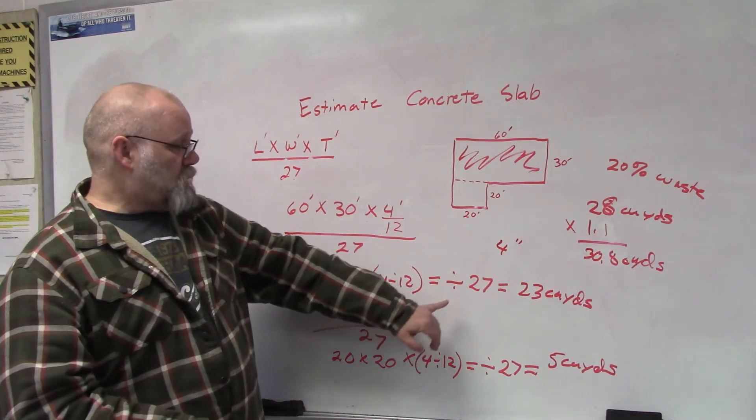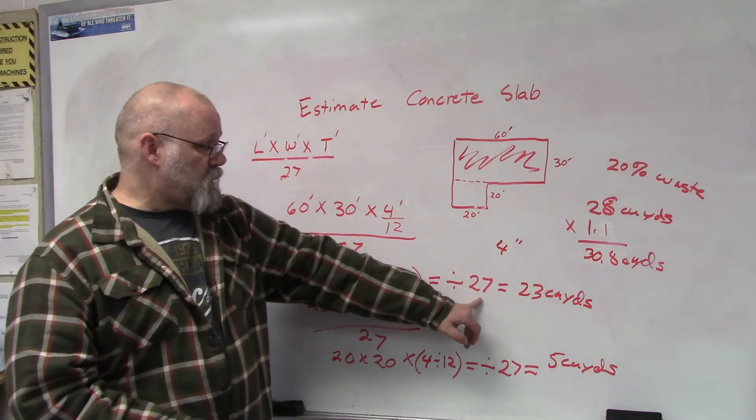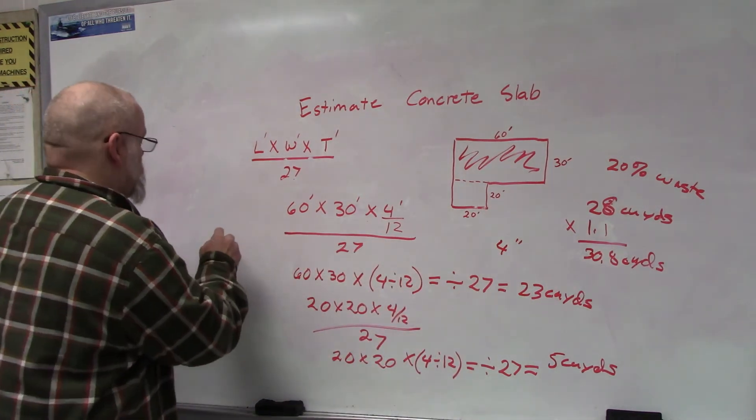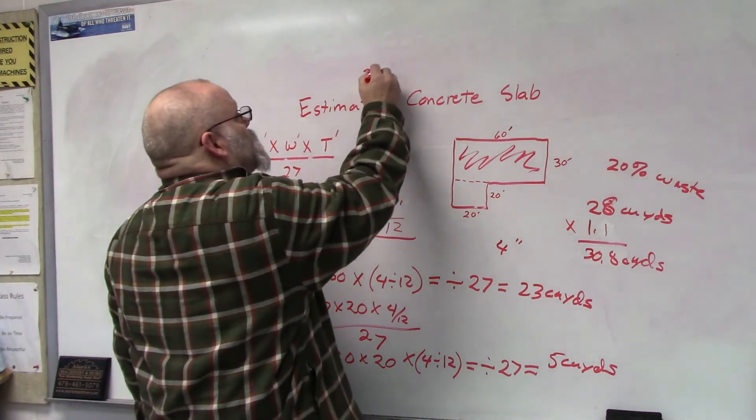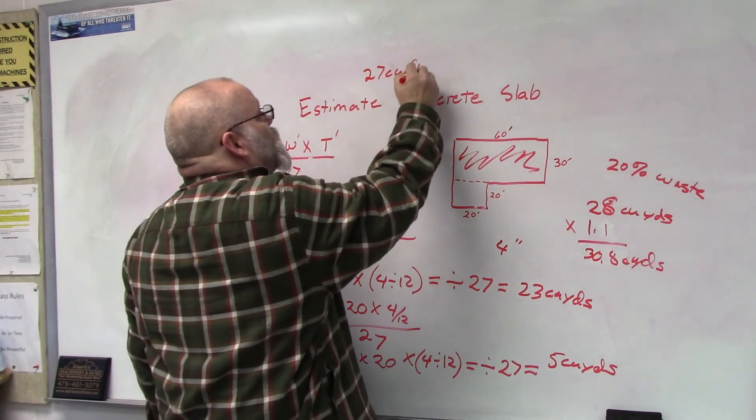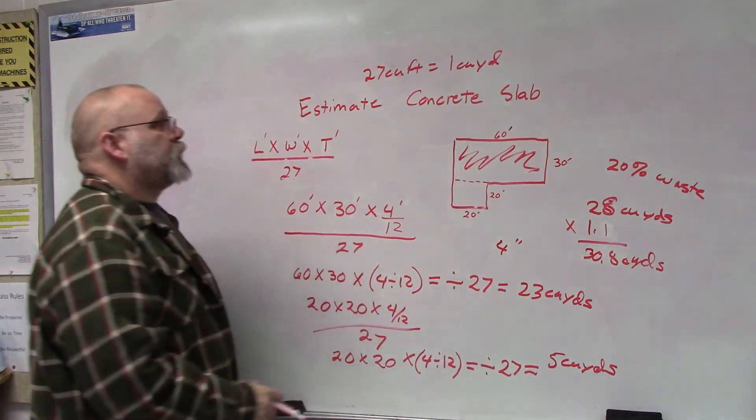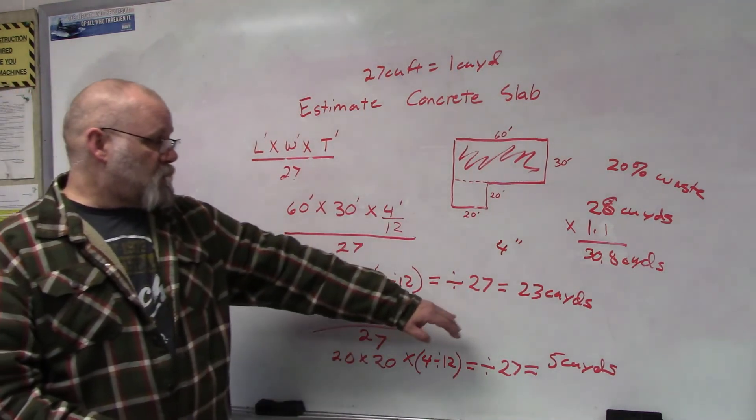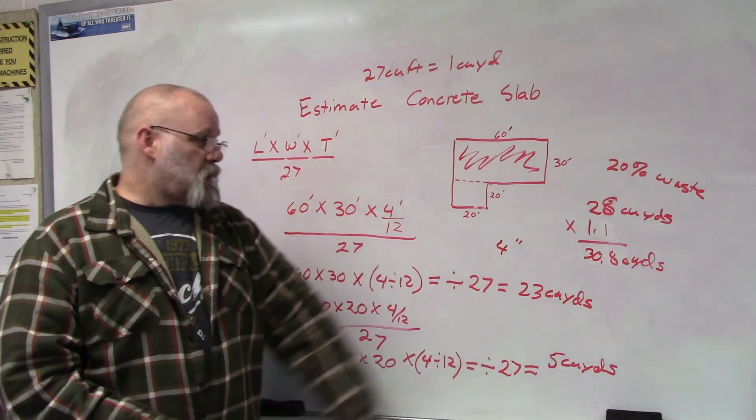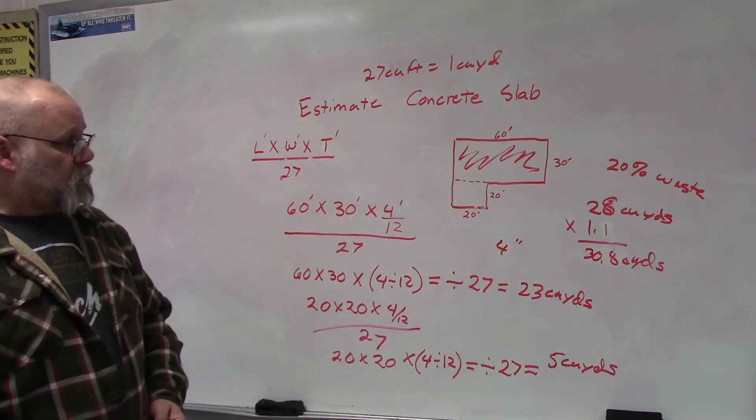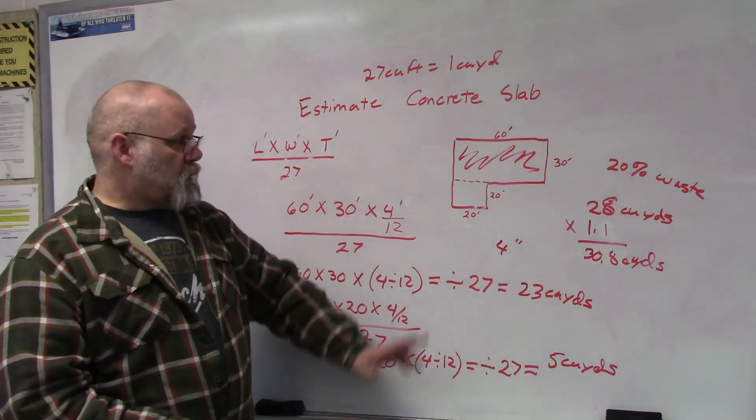Because there are 27 cubic feet—27 cubic feet equals one cubic yard—so that's how I convert it from feet into yards. So that's it for that slab.